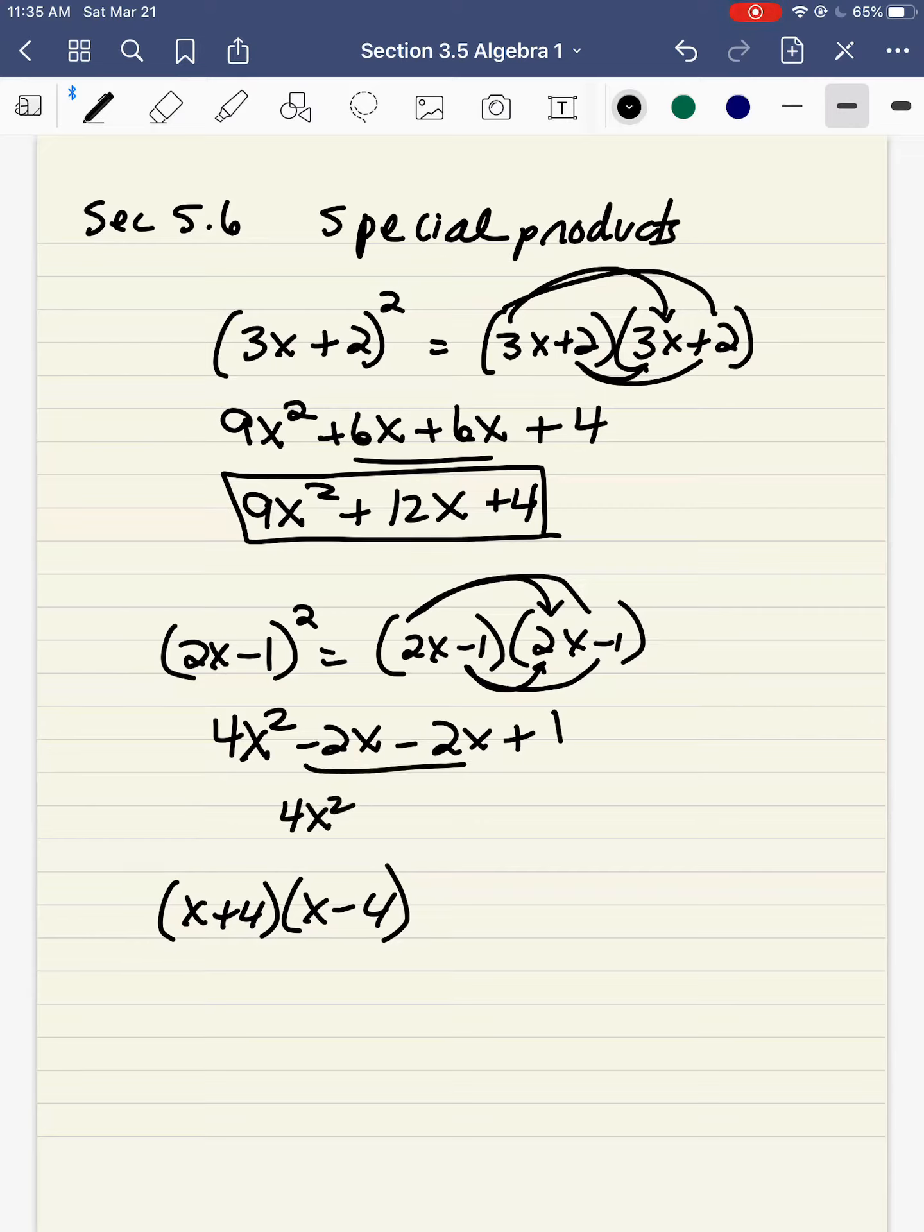So I have 4x squared, minus 2 minus 2 is minus 4x, plus 1. So again, you add the numbers, keep the variables the same when you're adding.